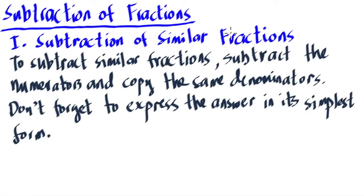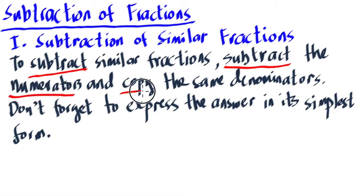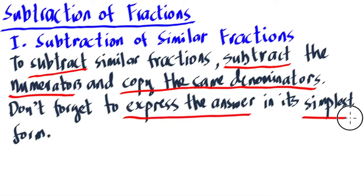Again, just like in the addition of fractions, this will be the simple one. To subtract similar fractions, what we will do is subtract the numerators and then copy the same denominator. That is exactly what we're doing in the addition of fractions. Just don't forget to express the answers in its simplest form, also known as their lowest forms. So, we're going to have some examples right after this.